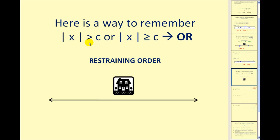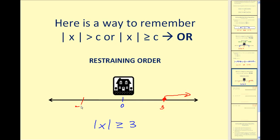Here's a way to remember that when you have the absolute value greater than or greater than or equal to a positive value of C, it will always be a compound inequality with OR. Think of a restraining order, which states that an individual cannot come within a certain distance from a person or location. If the court orders a distance to be greater than or equal to 3 blocks, the individual could be to the right 3 units or further, or to the left 3 units or further. Using inequalities: X less than or equal to negative 3 OR X greater than or equal to positive 3.